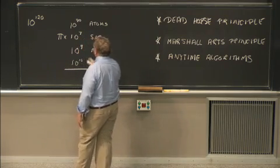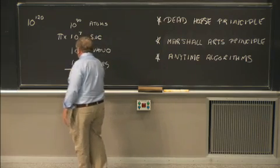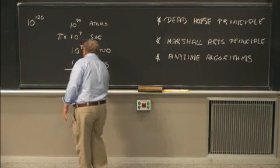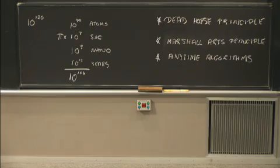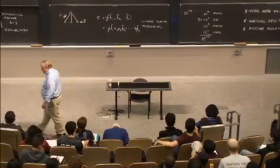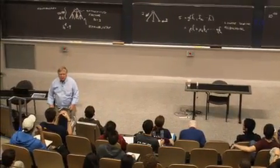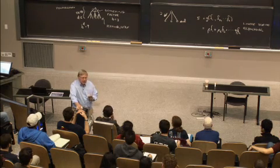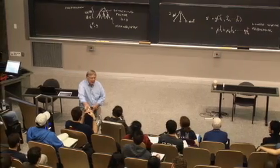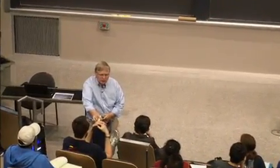Adding that up: 80 plus 9 plus 7 plus 10 gives roughly 10 to the 106th nanoseconds in the history of the universe, multiplied by the number of atoms. So if all the atoms in the universe were doing static evaluations at nanosecond speeds since the beginning of the Big Bang, it would still be 14 orders of magnitude short. We'd have to harness together lots of universes. So the British Museum algorithm is not going to work.